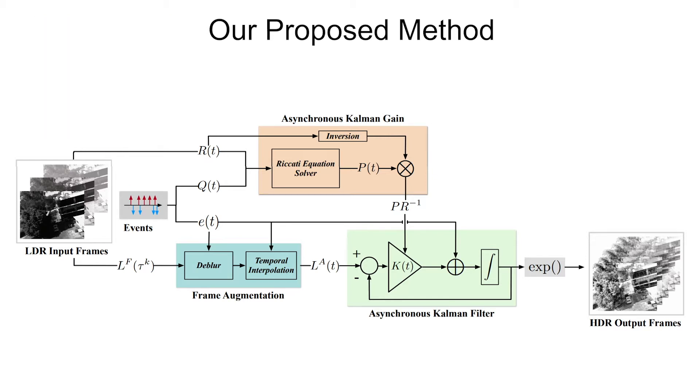Our method consists of three components: a pre-processing step called frame augmentation, asynchronous computation of the Kalman gain based on a proposed noise model for frames and events, and an asynchronous Kalman filter that combines event and frame information.